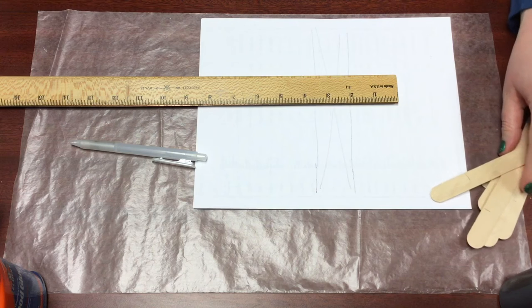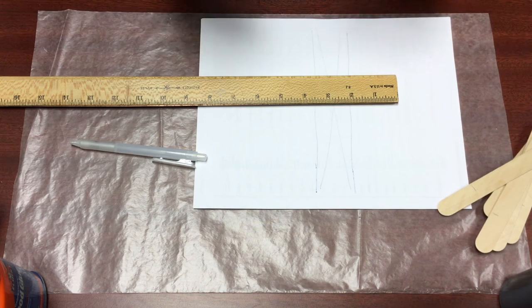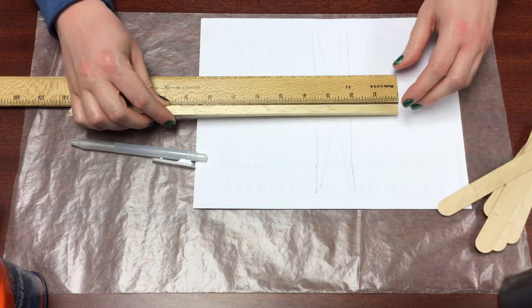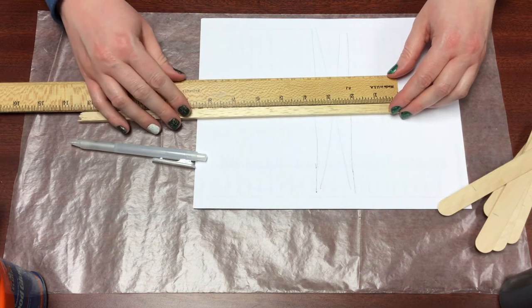Once you measure your craft sticks, measure your balsa wood into three 3 7/8 inch long pieces.